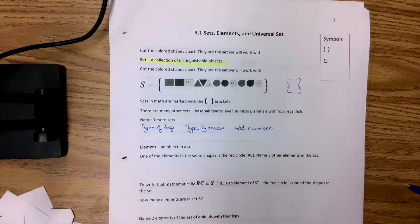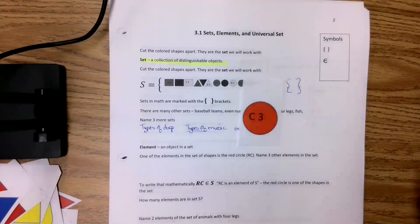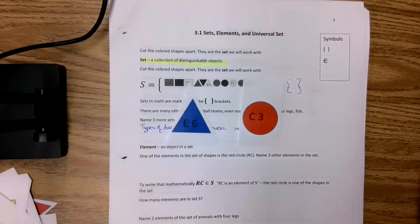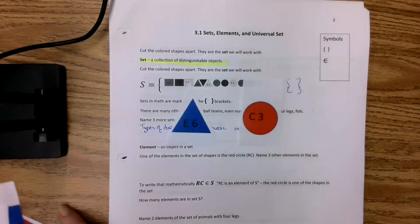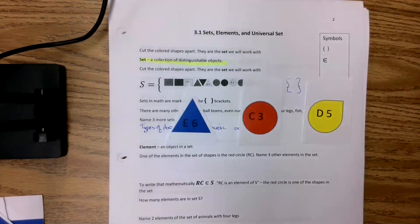Those are all sets. Pretty much if you write types of and then put something in the blank, you're going to be good. So an element is an object in a set. For example, there's the red circle. It is an element in our set. Here is the triangle. It's a blue triangle, or you could say it's a triangle labeled E6. That's an element in our set. There's another one, teardrop D5.